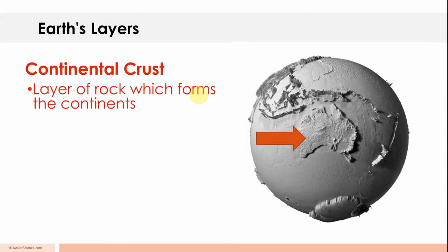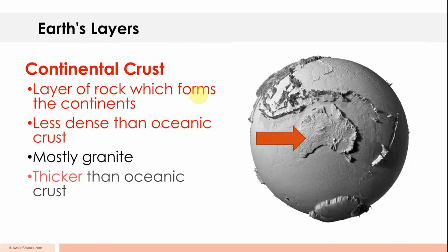Continental crust, layer of rock which forms the continents, but it's less dense than oceanic rock. Mostly granite, thicker than oceanic crust. Remember that density, it's very important, it's less dense.